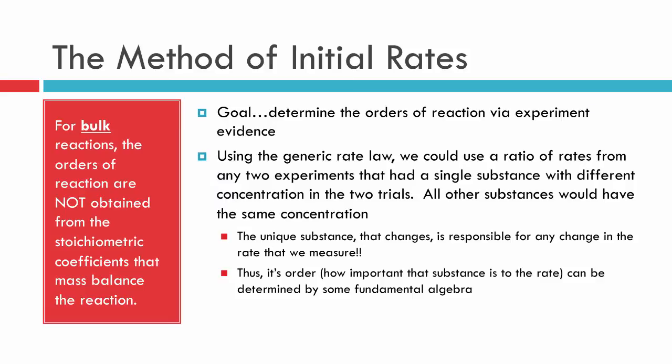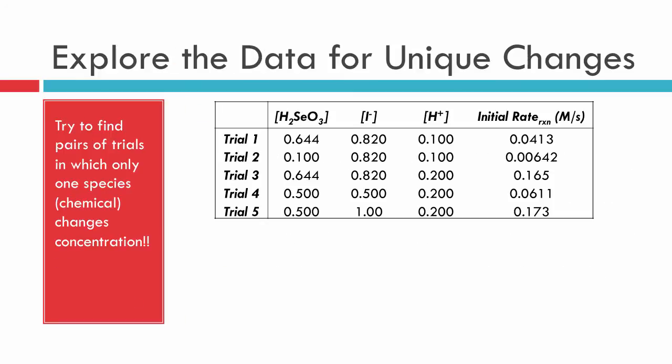The goal is to determine the orders of reaction from the experimental evidence. Keep in mind we don't get the orders of reaction from the stoichiometry for bulk reactions — skip that and use the experiment instead. The way we do this is by finding a substance that is unique to any two trials, so that if only one substance changes concentration, it is responsible for all the change that occurs in the rate.